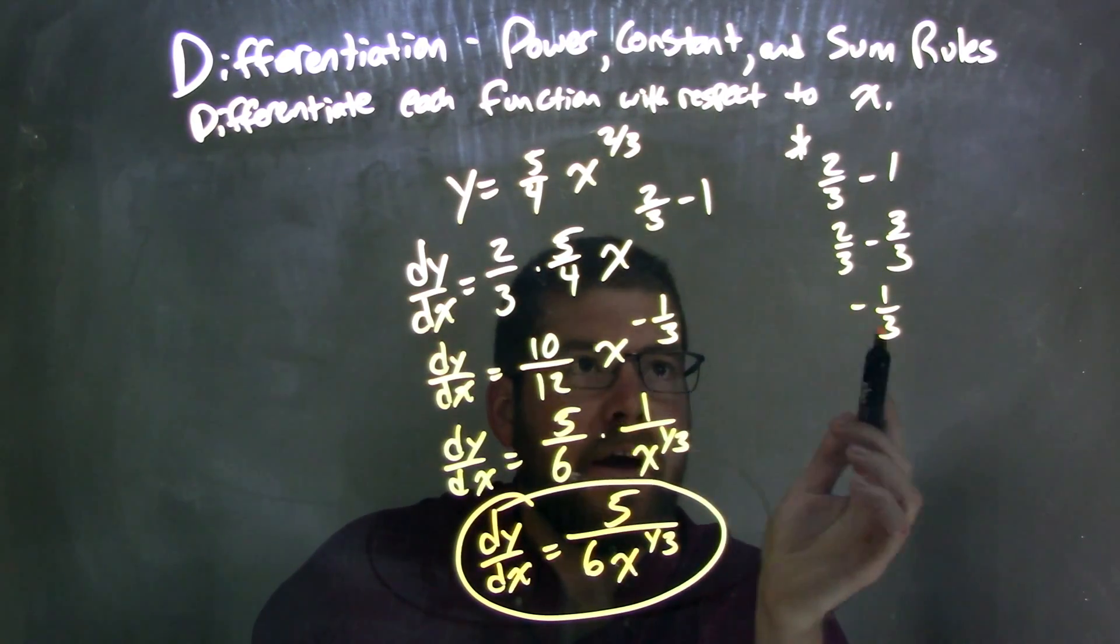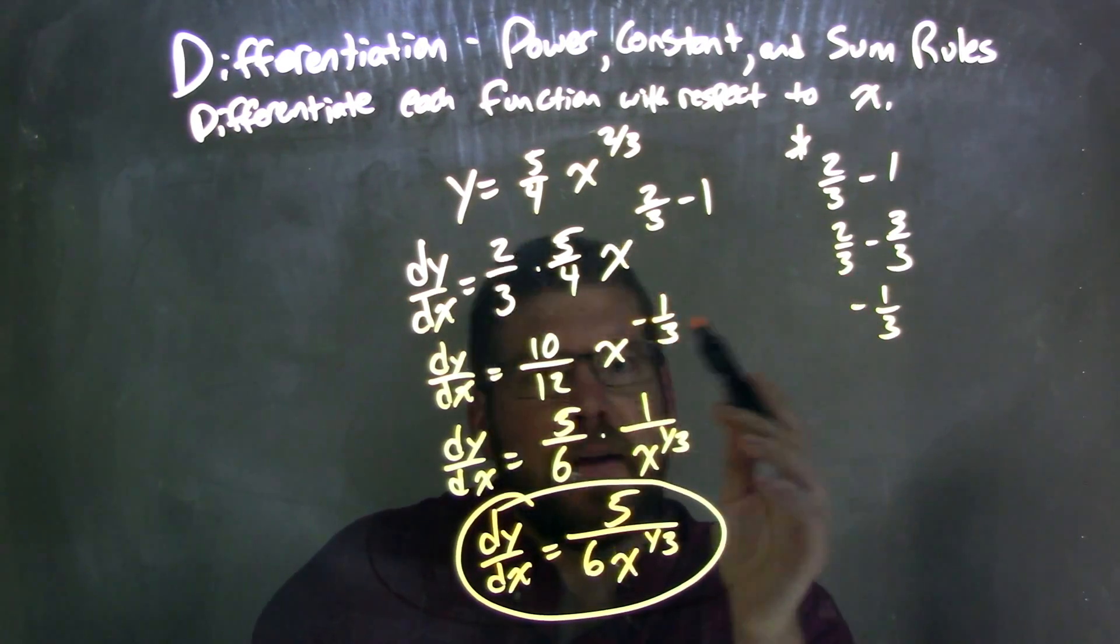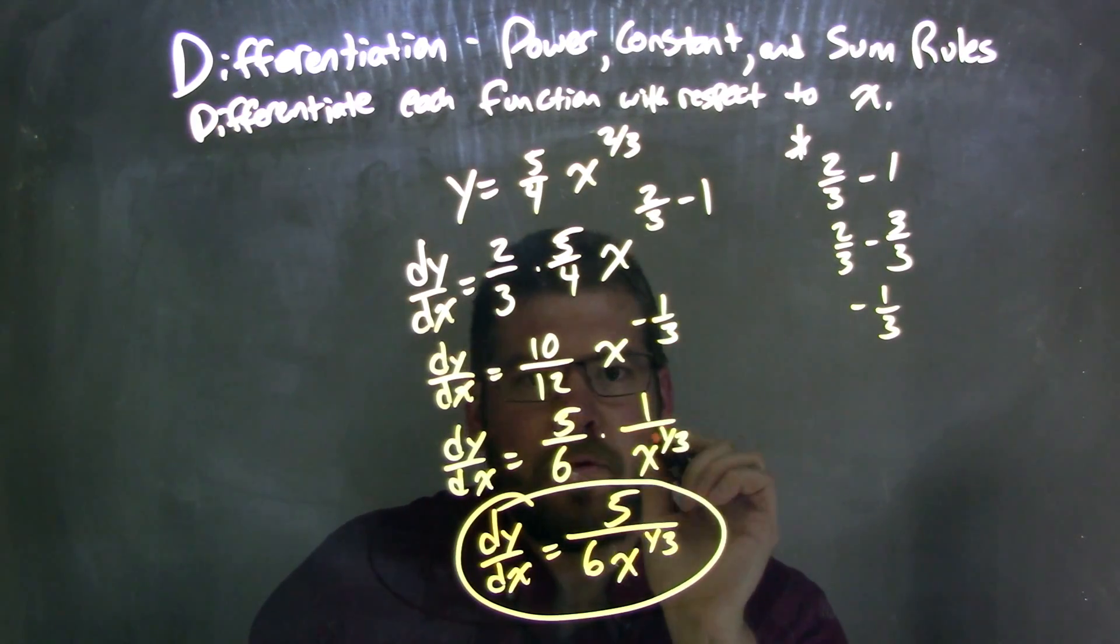And if you need help doing the subtraction in your head, 2 thirds minus 1 is written out here as negative 1 third. So now we have 10 over 12 x to the negative 1 third power. I simplify 10 over 12 to be 5 sixths.